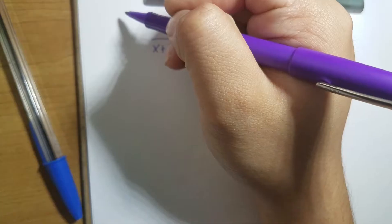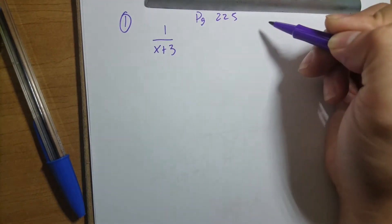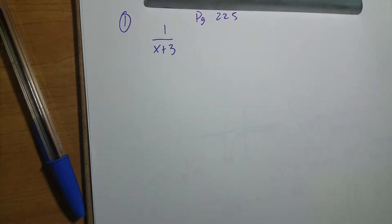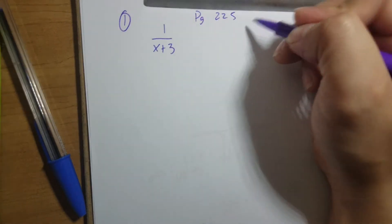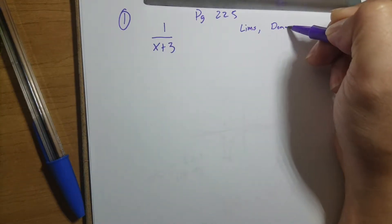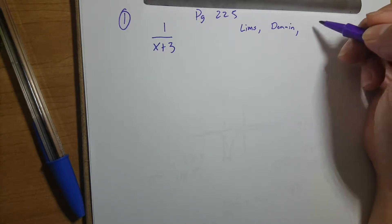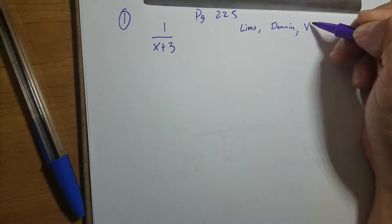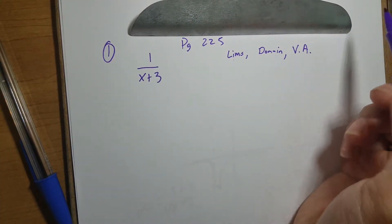So we have number one on page 225 — these are the exercises, not the quick review, so make sure you're doing the exercise ones. We have f(x) = 1/(x+3) and it's asking you to find the limits, the domain, and the vertical asymptotes.